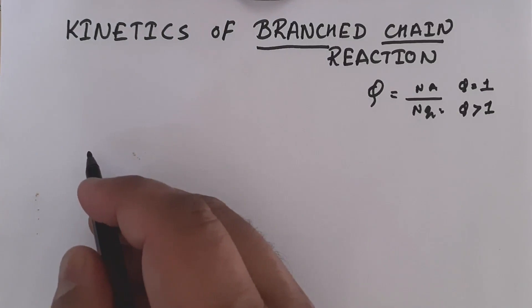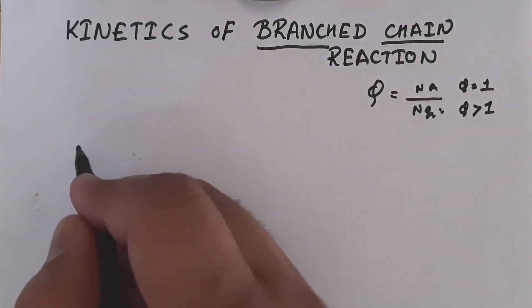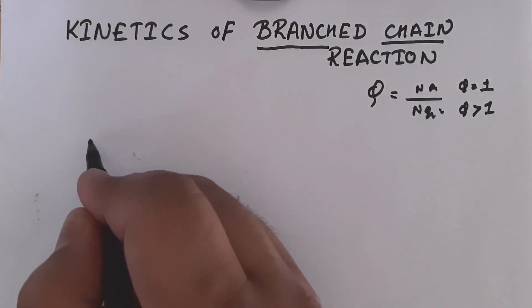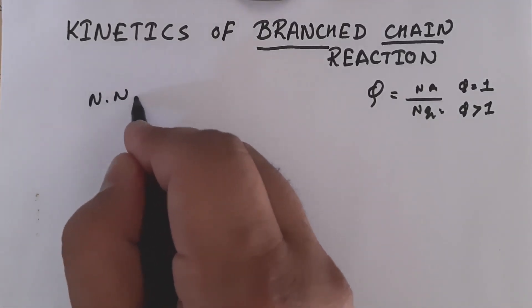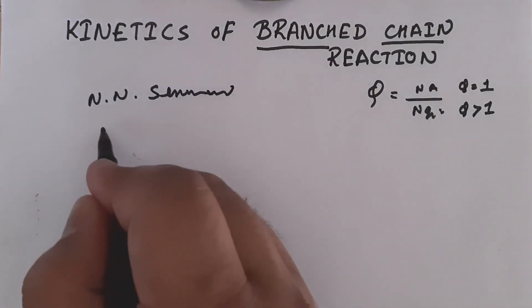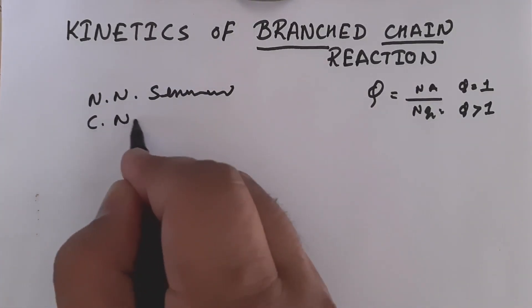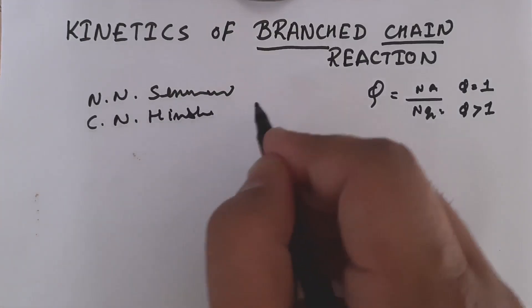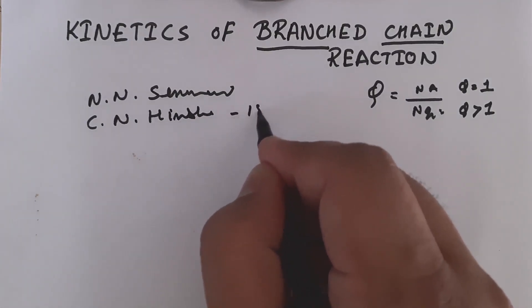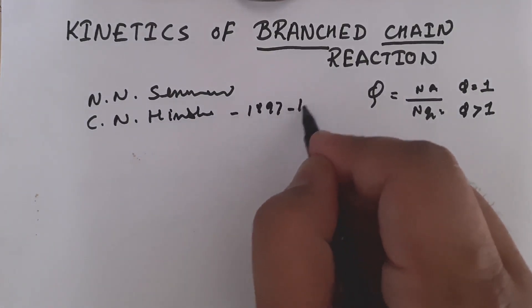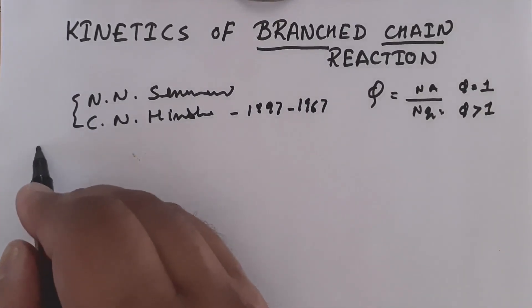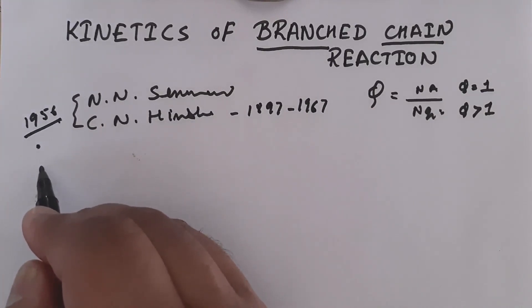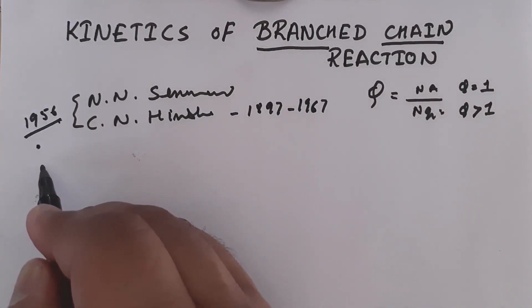These reactions were studied independently by two scientists: one is the Soviet scientist N. N. Semenov, and the second is C. N. Hinshelwood. Hinshelwood studied these reactions in around 1897 to 1967, and both scientists were awarded the Nobel Prize in 1956 for their reaction mechanisms for branched chain reactions.